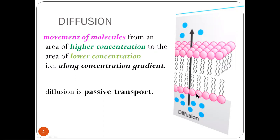Here are three molecules. So we go from the higher amount to the lower amount. We call it along the concentration gradient. Along concentration gradient means that the higher amount goes to the lower amount, or higher concentration goes to the lower concentration.